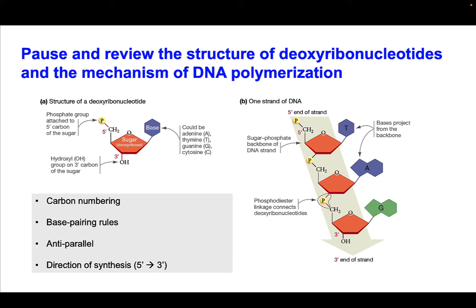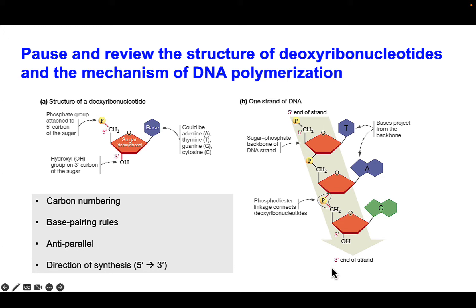Also refresh yourselves on the base pairing rules — what pairs with adenine, thymine, guanine, and cytosine. And looking at polymerization, refresh yourself about the rules of how DNA is synthesized, the direction of synthesis, and how in the double helix the two strands are anti-parallel and what those different directions mean — 5 prime to 3 prime, and what the anti-parallel strand would look like.